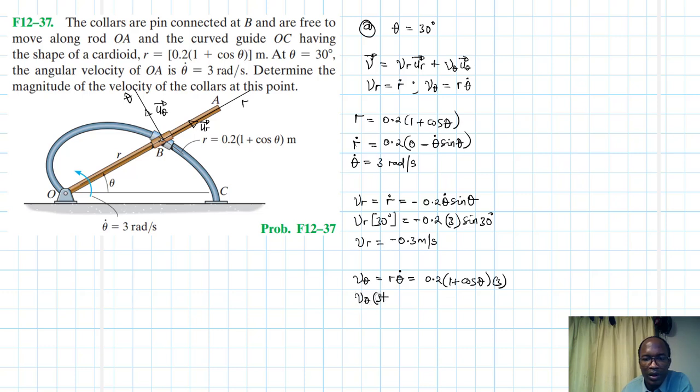At 30 degrees, this becomes 0.2(1 + cos 30°) × 3 = 1.12 m/s.